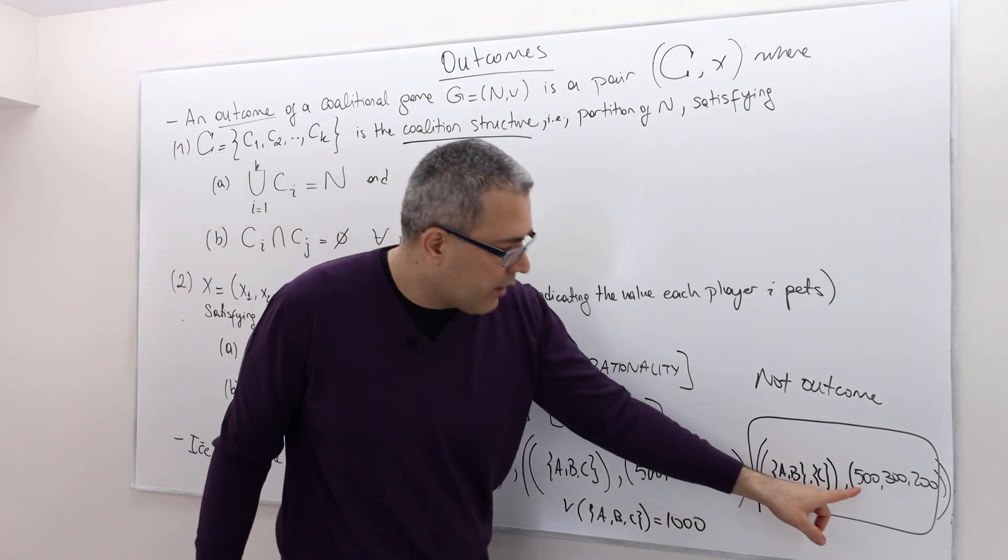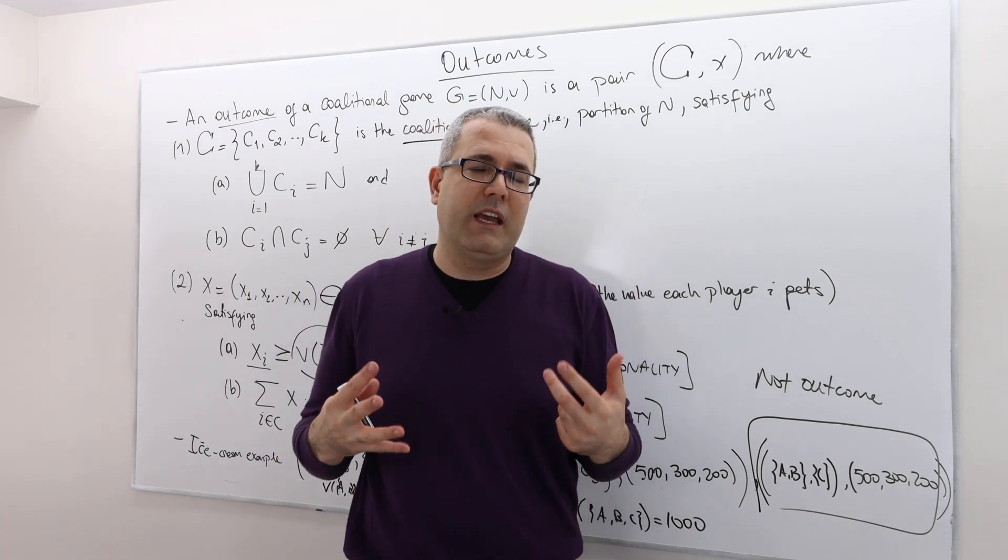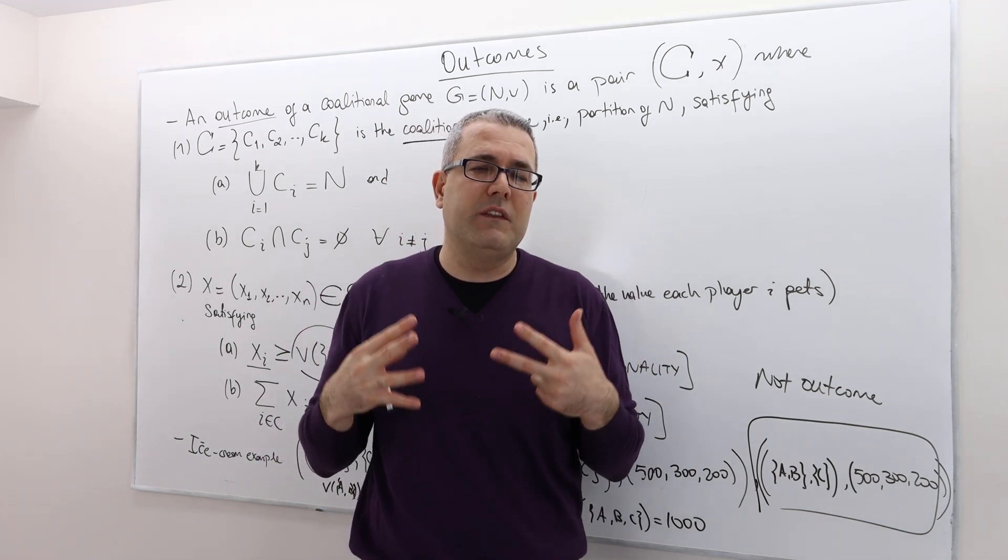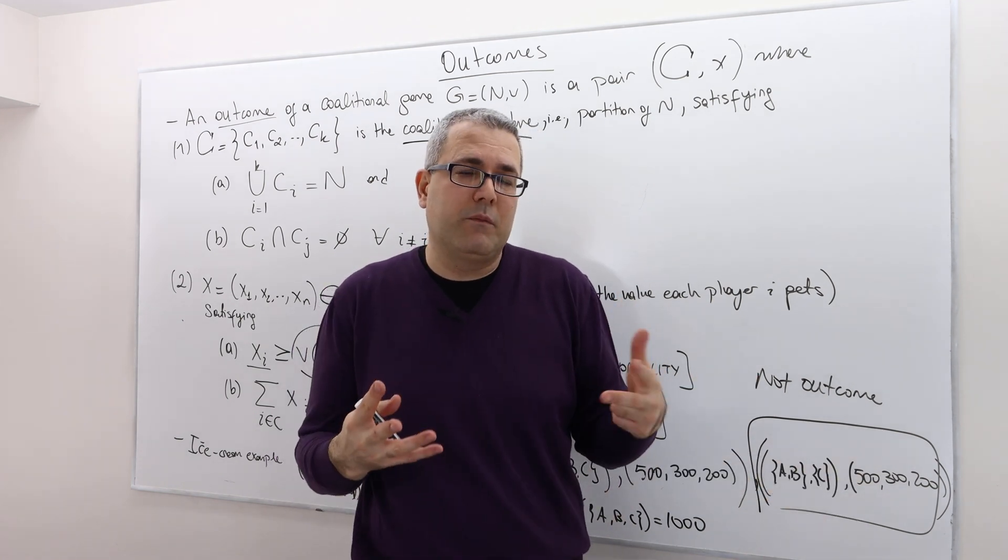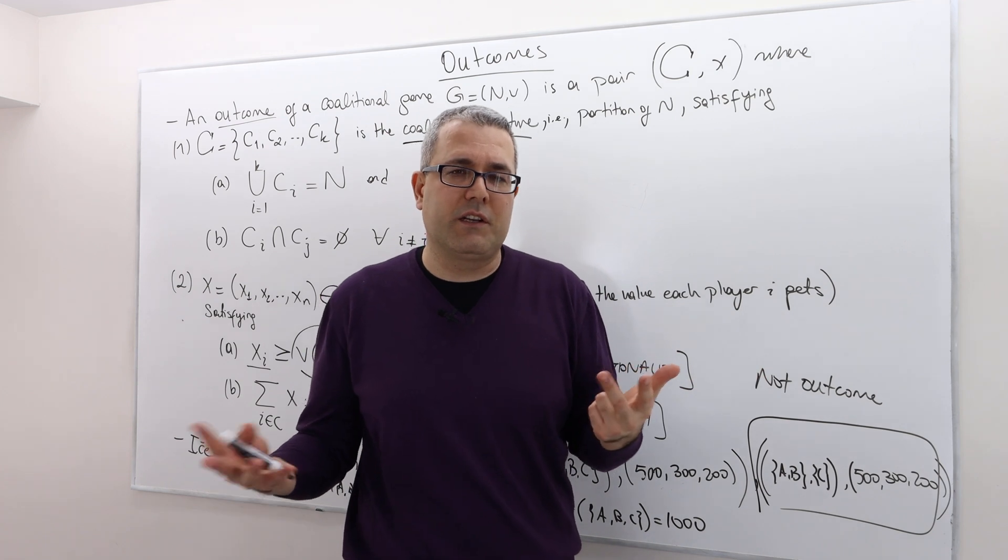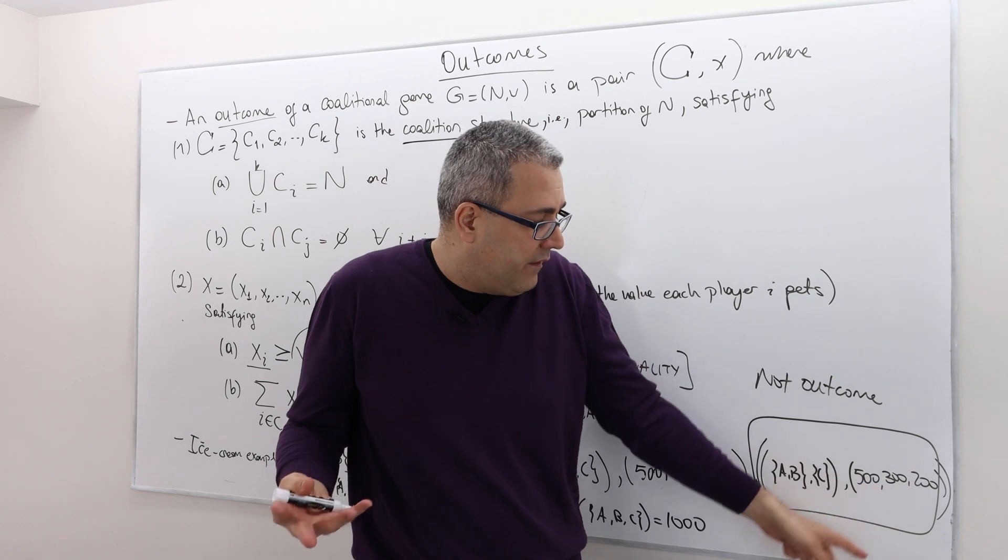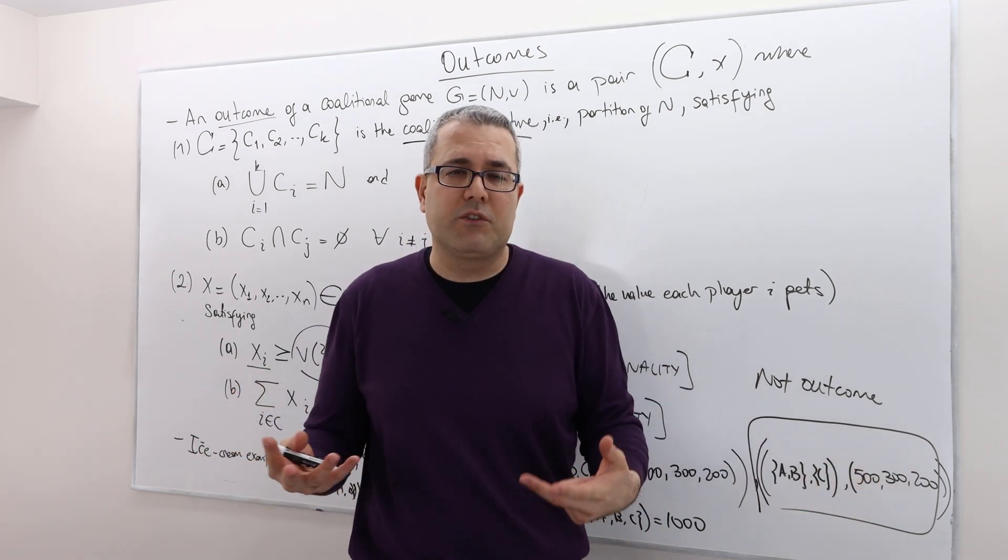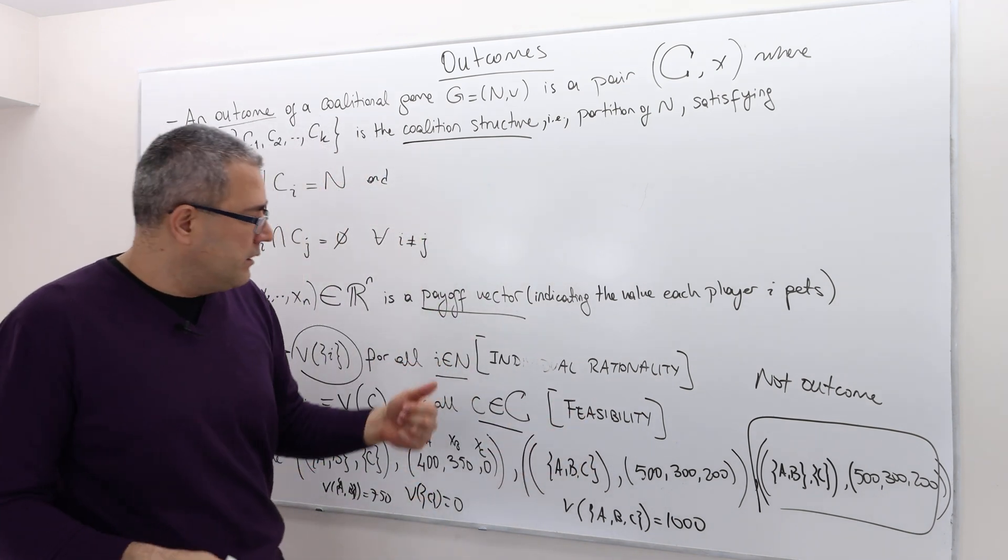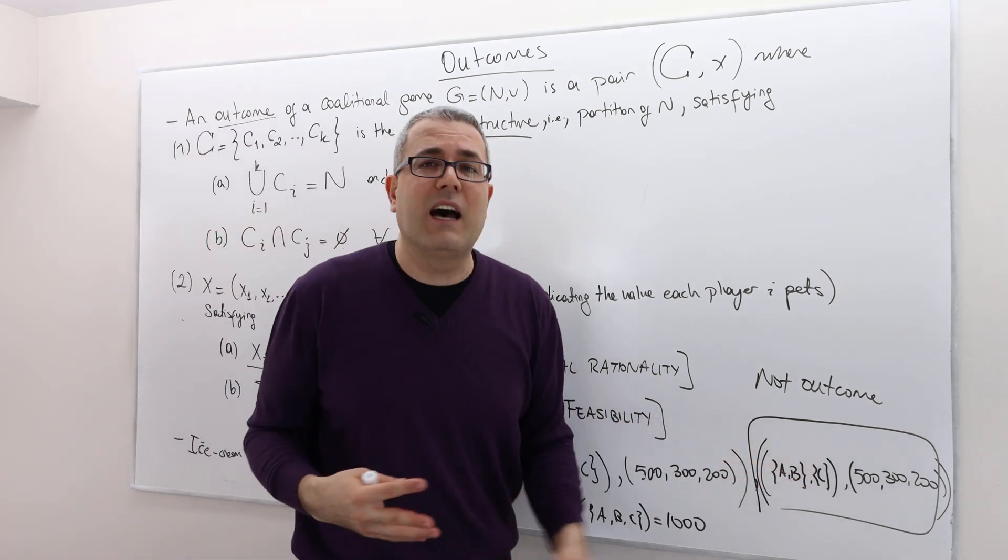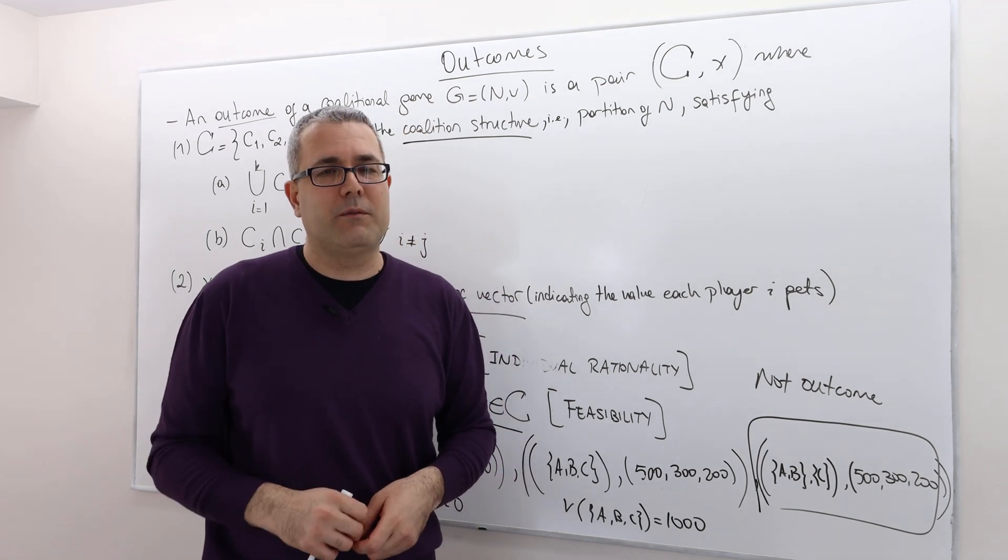So here, however, XA plus XB is 800. So this coalition can only buy 750 grams of ice cream. But they split it by 500, 300 ice cream. That's not possible. And they give agency some 200 grams of ice cream. Again, that's not possible. It's not feasible. So for that reason, this is not an outcome of the ice cream game that we described. I hope that was clear.